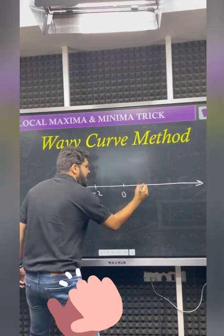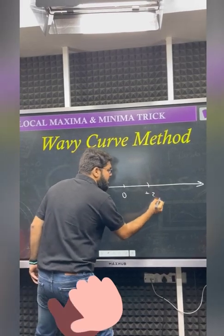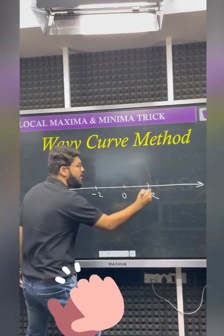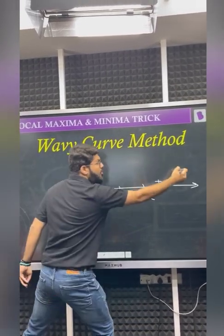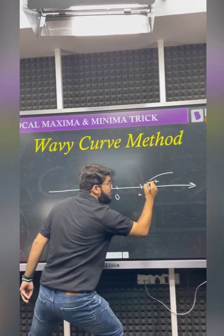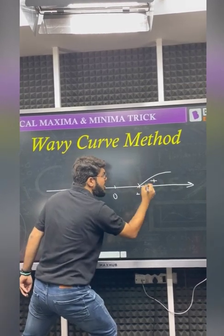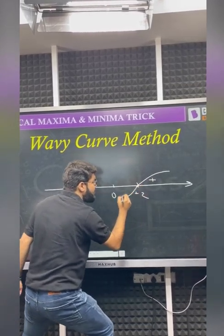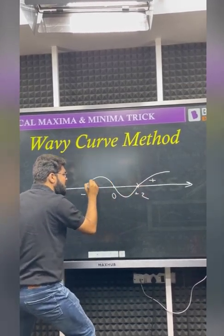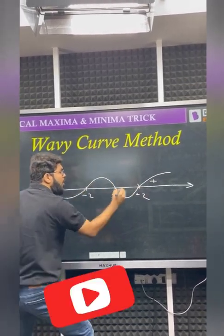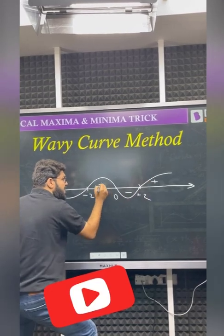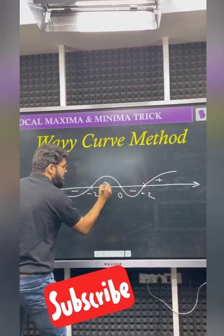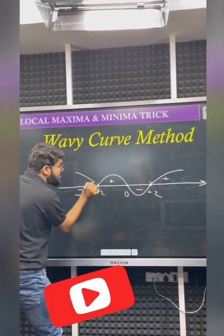To draw the wavy curve, take the number line and mark the stationary points in increasing order. The wave starts from the right of the largest root with a plus sign, and because it's a wave it alternates in sign: plus, minus, plus, minus.